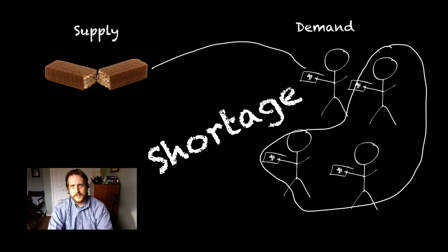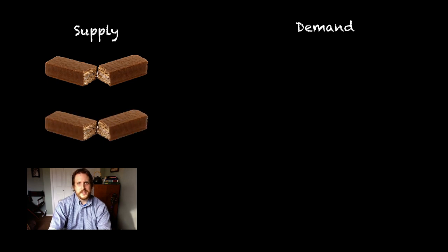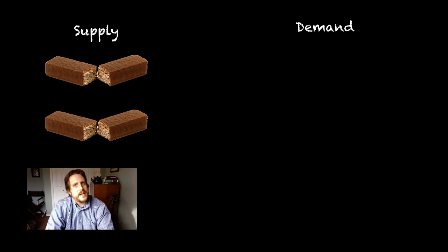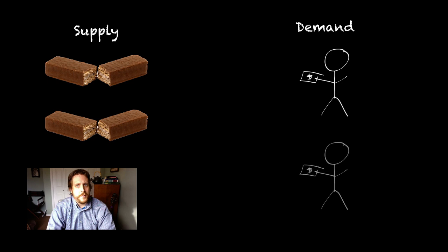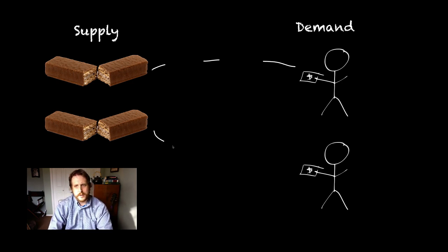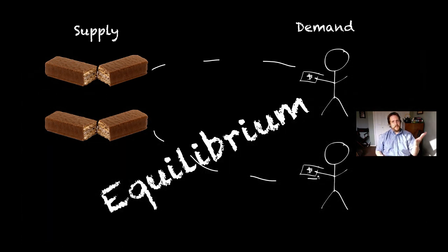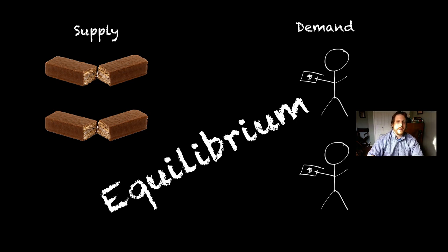Let's take a look at one more scenario from my candy store. This time I purchased two candy bars, and I decide that $1 was not enough to charge but $5 was too much. So I'm going to charge $3 for my candy bars. I open up my shop, and now I've got only two people who want to buy candy bars. This candy bar goes to this person, and this candy bar goes to this person, and I have made some money. We call this situation equilibrium, where the same amount of stuff I had to sell went to the same amount of people.